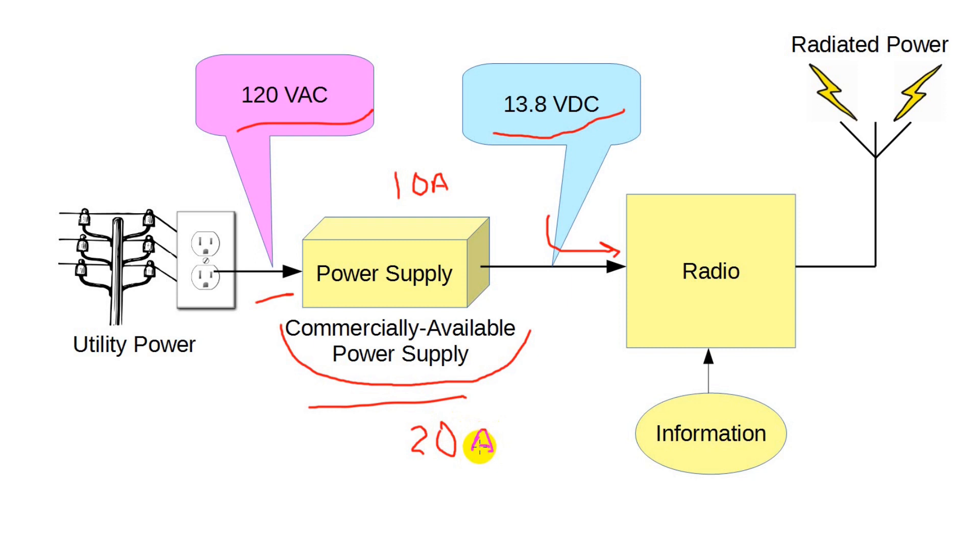All supplies can surge beyond their ratings a bit for occasional peaks. You can get so-called linear supplies or switching supplies. The linear power supplies are blessedly quiet, not only acoustically, but also in terms of low noise on the power output. The switching power supplies are far smaller and lighter, as well as more efficient.